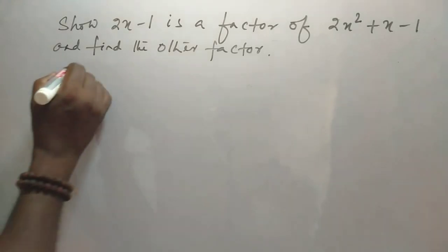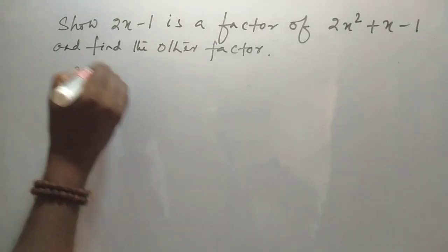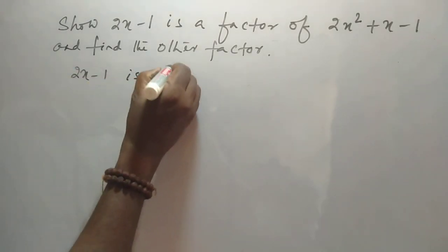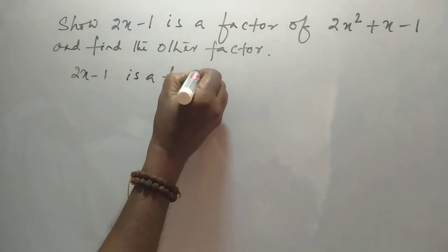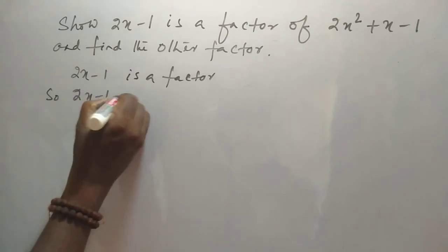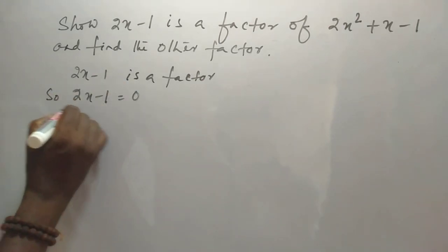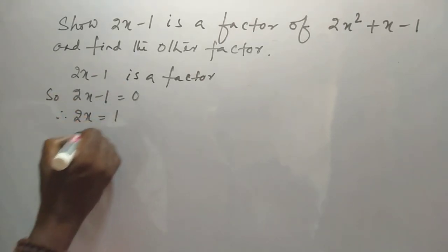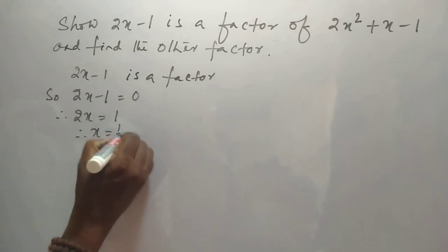Now, 2x minus 1 is a factor. So, 2x minus 1 is equal to 0, then 2x is equal to 1, finally x is equal to 1 by 2.